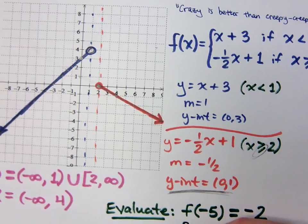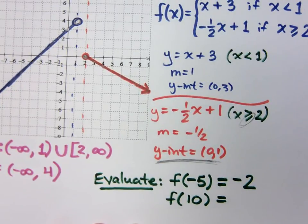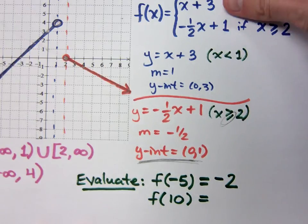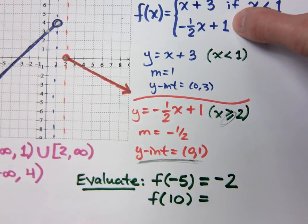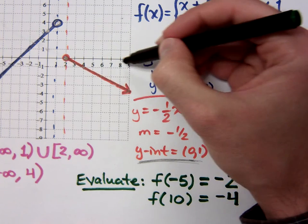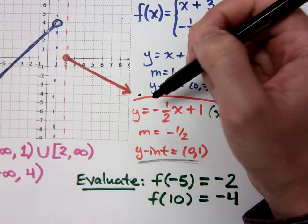If I ask you to evaluate f of 10, who will accept a value of 10? Is 10 less than 1? No. Is 10 greater than or equal to 2? Yes. So plug 10 into the second piece and you get negative 4. Does that match the picture? If you go all the way out to x equals 10, you'll be at about negative 4 — yeah, that looks about right.